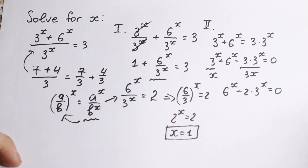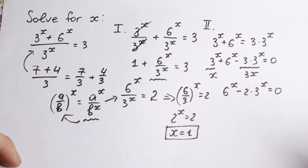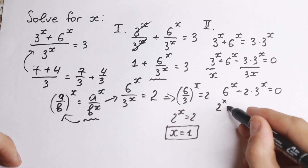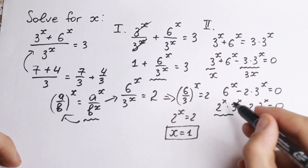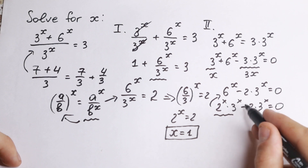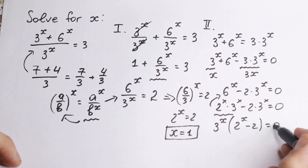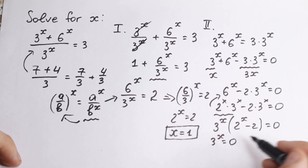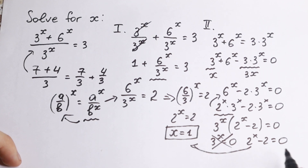This second method is more complicated but teaches us interesting rules. We write 6 to the x as 2 to the x times 3 to the x, minus 2 times 3 to the x equal to 0. We can factor out 3 to the x: 3 to the x times (2 to the x minus 2) equal to 0. Since 3 to the x equal to 0 is impossible for any real x, we use the second factor: 2 to the x minus 2 equal to 0, so 2 to the x equals 2 and x equals 1.